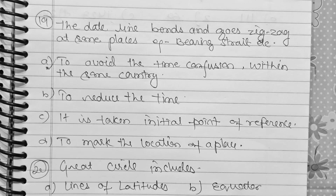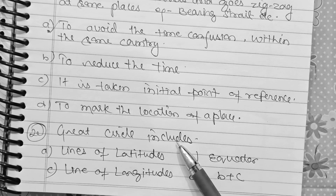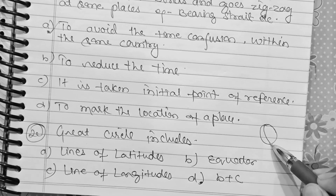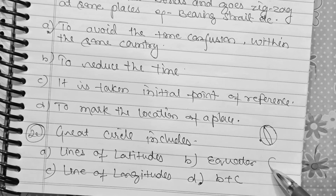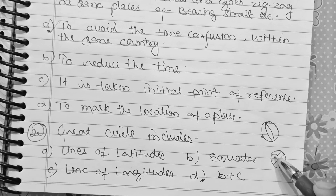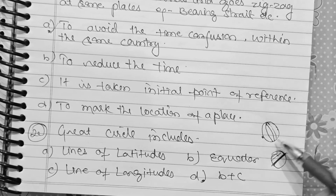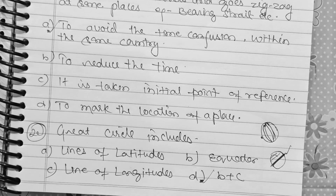Question 20: Great circles include — Option A: lines of latitude. Option B: equator. Option C: lines of longitude. Option D: both B and C, equator and lines of longitude. The equator and lines of longitude are great circles, so option D, both B and C, is correct.